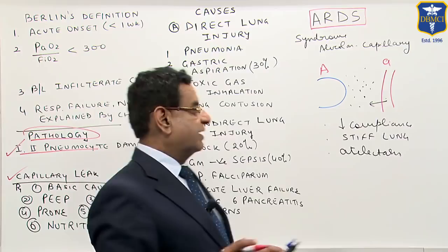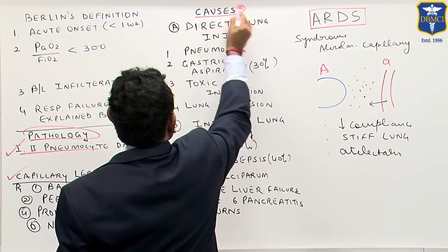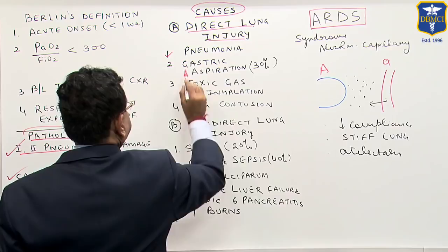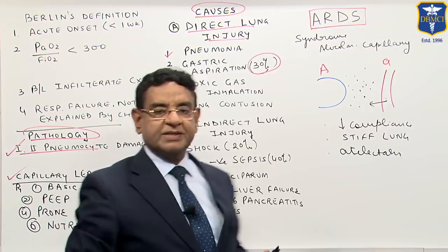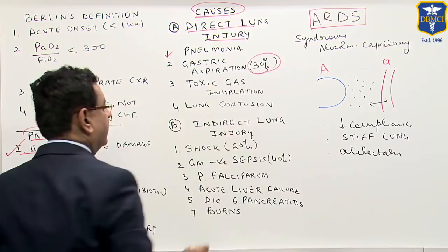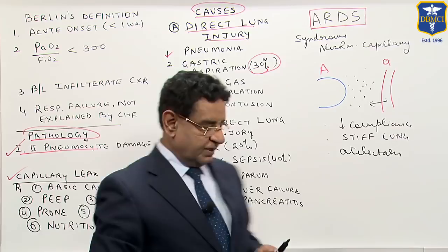Let us see the causes of ARDS. It could be direct lung injury. This happens in pneumonia. Gastric aspiration accounts for around 30 percent of cases, especially in the postoperative stage. Toxic gas inhalation and some lung contusion are the uncommon causes of direct lung injury.